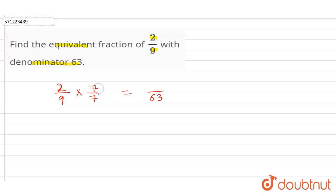Because 7 by 7 is 1 only, and when we multiply 1 with any number the number remains as it is. So 2 into 7 is 14, and 9 into 7 is 63.